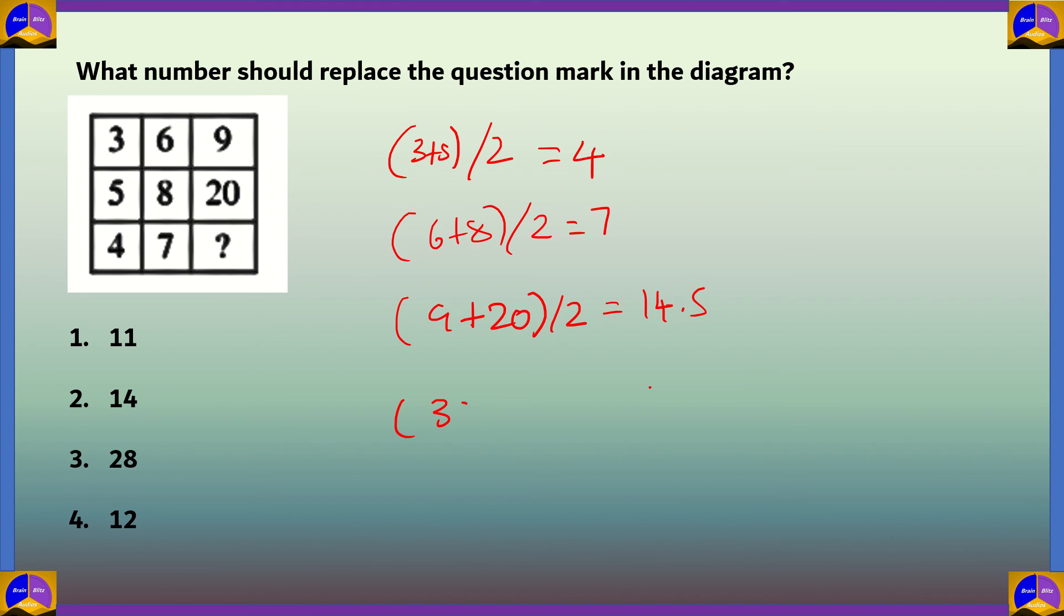If we check first column 3 into second column 6, 3 into 6 is 18, if we divide it by 2 we get 9. Let's do it for the next row. 5 into 8 is 40, divided by 2 equals 20.